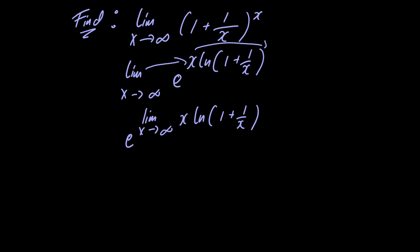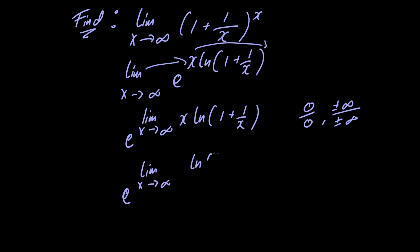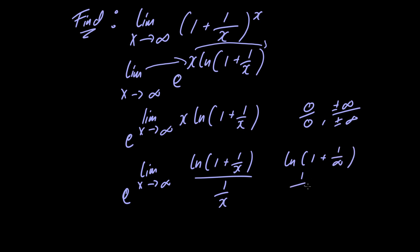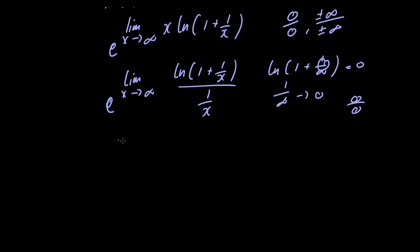In order to evaluate this limit, we want to get it into a form amenable to L'Hôpital's rule — an indeterminate form of 0 over 0, or plus or minus infinity over plus or minus infinity. We divide by 1 over x, giving e raised to the limit as x approaches infinity of the natural logarithm of 1 plus 1 over x, divided by 1 over x. Letting x go to infinity, 1 over infinity goes to 0, so we get the natural logarithm of 1 over 0, which is 0 over 0 — an indeterminate form.